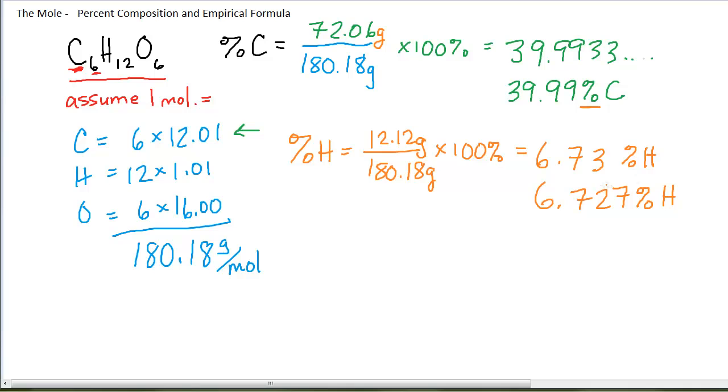The sig figs in a percent composition by mass is a little squishy, if you will. If I want to report the percent composition of each element, all three of the elements, I might pick, for example, to go to two decimal places on each of the percentages. And we'll see why in just a second, once we do the percent oxygen.